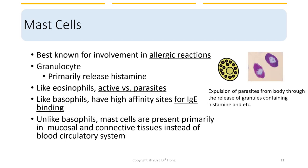Now let's look at mast cells. Mast cells are best known for involvement in allergic reactions. They are also considered a type of granulocyte and primarily release histamine — sharing similarities with both eosinophils and basophils. Like eosinophils, they are active against parasites; like basophils, they have high affinity sites for IgE, so IgE can bind and trigger histamine release. However, a key difference: while basophils are primarily found in the circulation, mast cells are present primarily in mucosal and connective tissues.